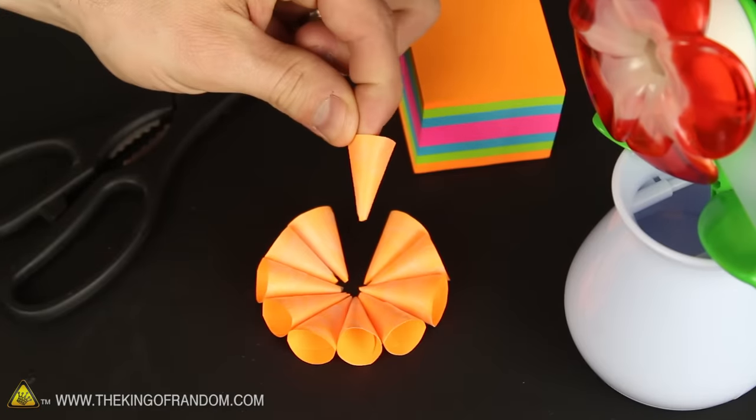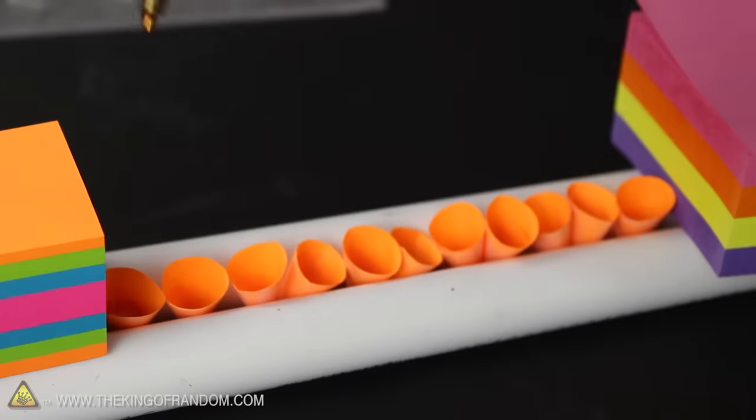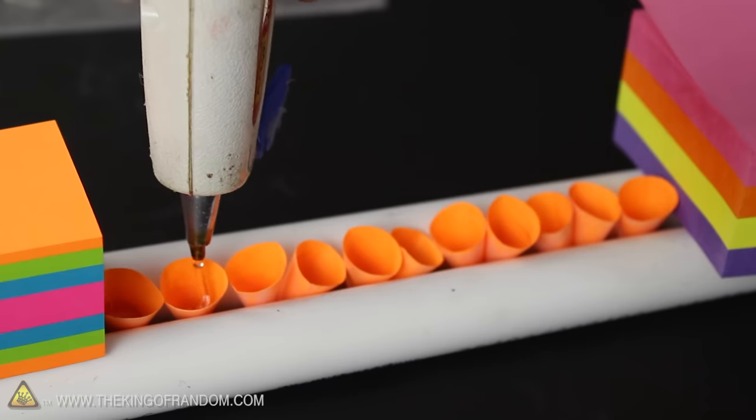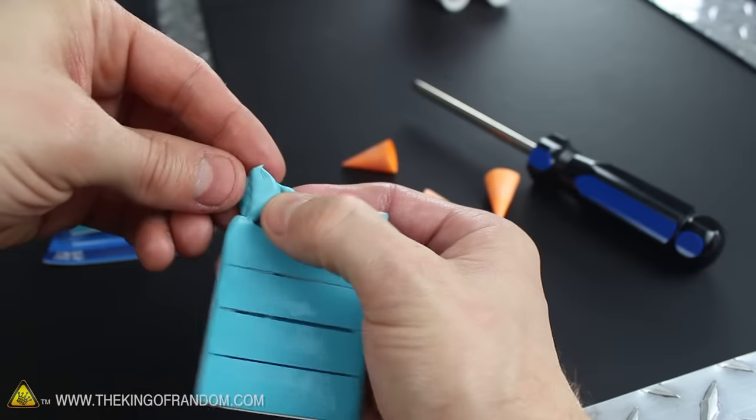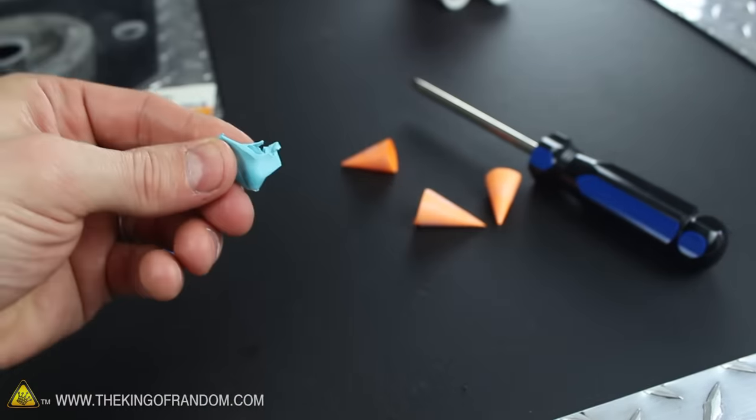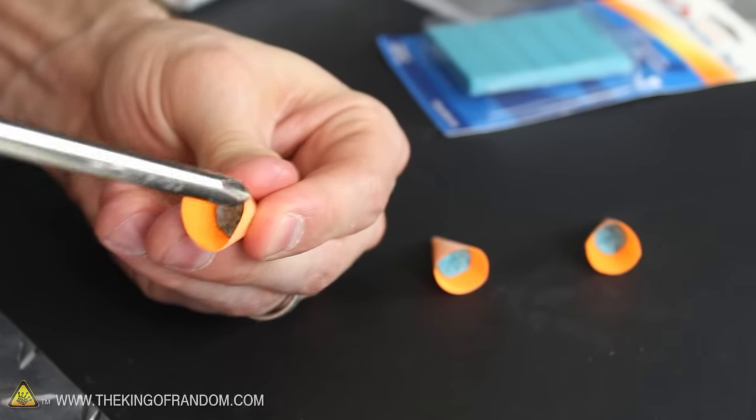But it's not quite ready to use yet. We still need to add some weight to the tip so they'll fly straight. I found one of the quickest and easiest ways to do that is to squirt a little hot glue inside the cones until they're about a third of the way full. If you don't have hot glue, try pulling off a little piece of poster putty instead and shove it down into the tip with something like a screwdriver. That'll work just as good.